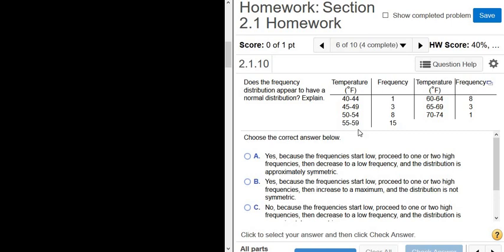Does the frequency distribution appear to have a normal distribution explained? So I'm going to go ahead and write down the table over here. So we have our table.